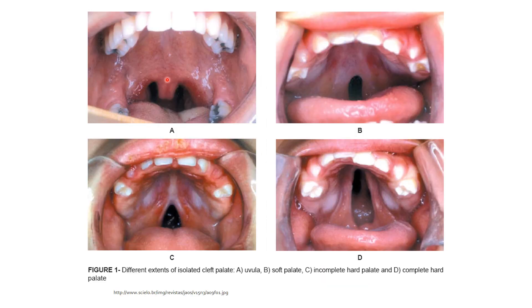An isolated cleft of the secondary palate shows the alveolar ridge intact but the secondary palate open. A submucosal cleft is where the mucosa appears intact but there's actually a cleft above it on the nasal side. One indicator is a bifid uvula — where you have two uvulas — which can sometimes separate when touched with a tongue depressor. We also see examples of secondary palatal clefts and complete palatal clefts.